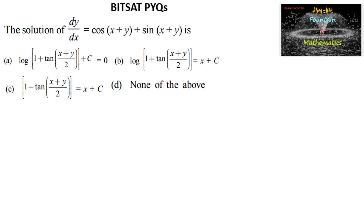We need to find the solution of the differential equation dy/dx = cos(x+y) + sin(x+y). Here both the trigonometric ratios cos and sin are in terms of x+y, so let us substitute.